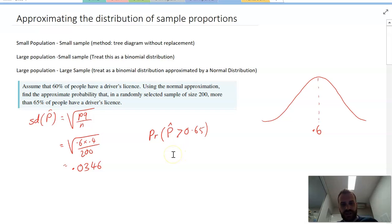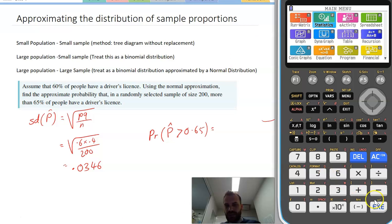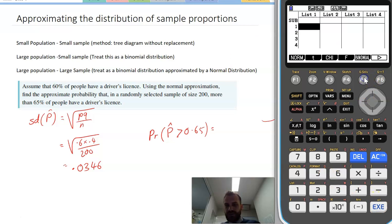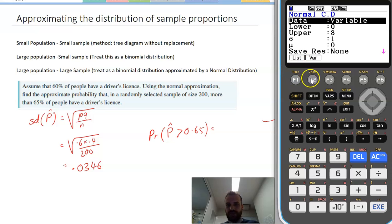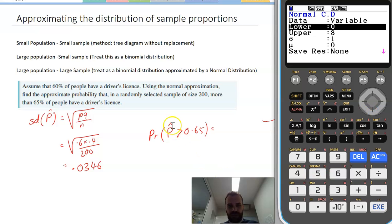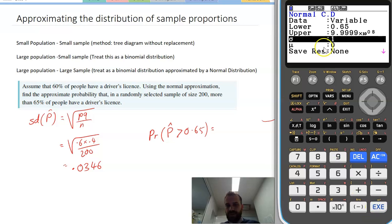And from here, we're just going to use our calculator to find our answer. So I'm in stat mode. I'll go in there now. Distribution. It's a normal distribution. And we're going to look for a normal CD. Now, the lower value, we want to be greater than 0.65. So that's going to be my lower value. My upper value, I'm just going to put a big number in the upper value.